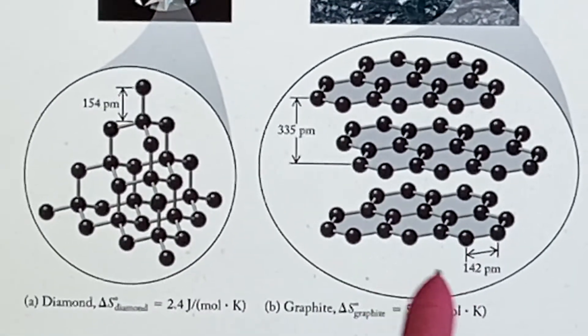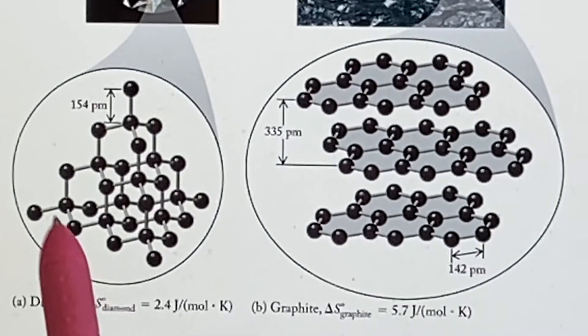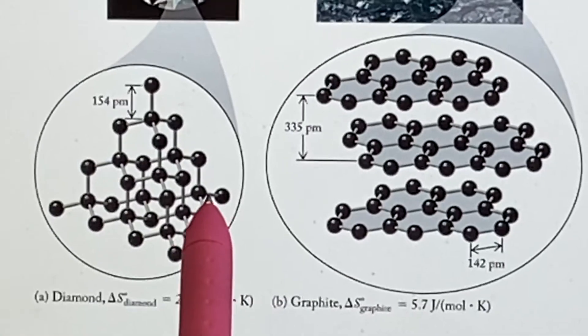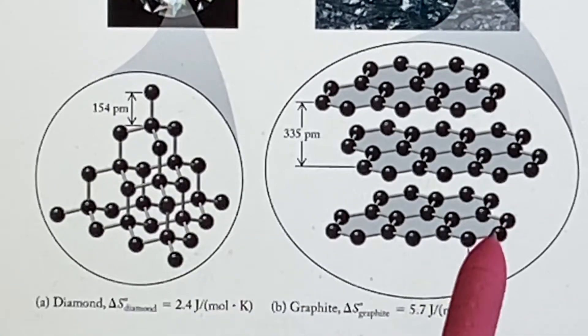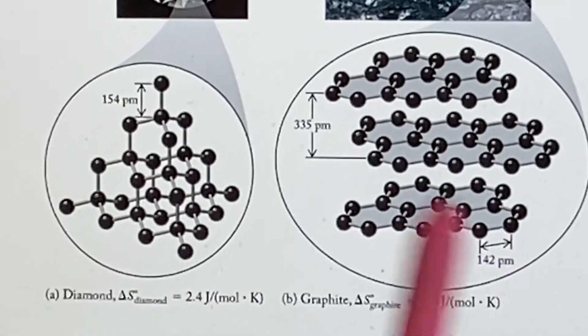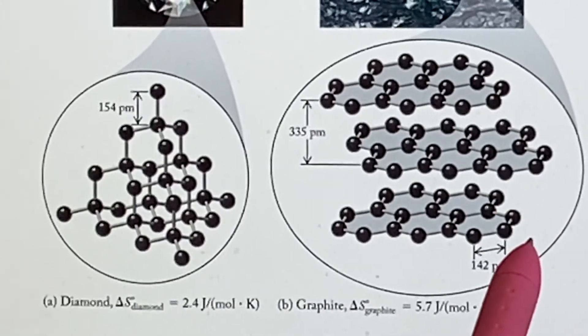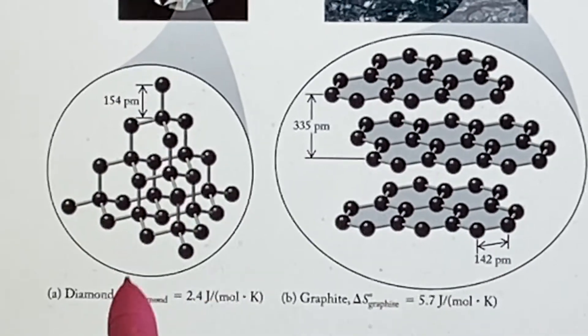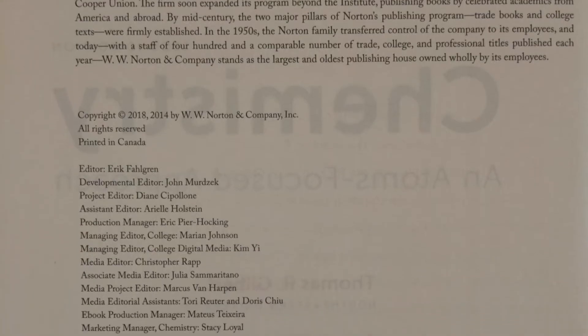So, there's a big barrier to this changing spontaneously into that. What this is telling us is that this is the more stable configuration. This is what we would expect to find. And yes, you're going to find a lot more coal out there in the world than you're going to find diamonds.